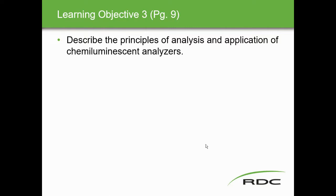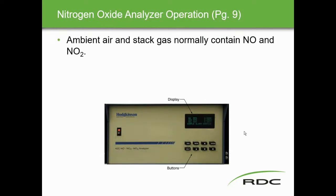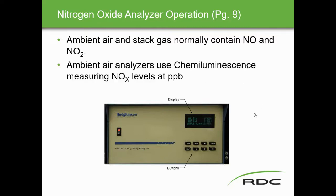Learning objective three: describe the principles of analysis and application of chemiluminescent analyzers. Ambient air and stack emissions normally contain nitric oxide and nitrogen dioxide from combustion. Ambient air analyzers use chemiluminescence to measure NOx levels at parts per billion. In contrast, UV analyzers measure stack gas NO2 at parts per million. Chemiluminescence gives us that much finer parts-per-billion sensitivity.